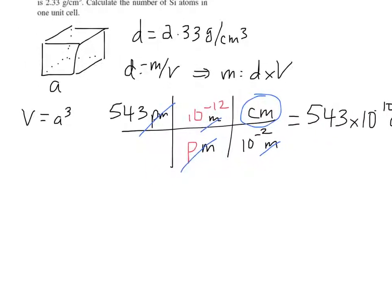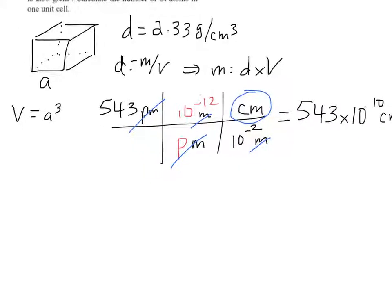So we want to get the volume and we just have to cube that. So the volume then is the cube of that. And if you type that in on your calculator, you get 1.60 times 10 to the minus 22. And now we've converted to units of cubic centimeters.